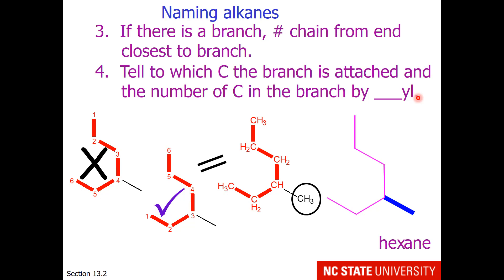That branch is one carbon long, so the root for that is 'meth'. It's on the third carbon, so we call this 3-methylhexane. For typing purposes, keep in mind that dashes go between numbers and letters. There is no dash between 'methyl' and 'hexane'. So this is how we'd name this 7-carbon alkane.